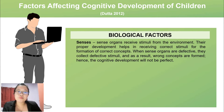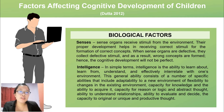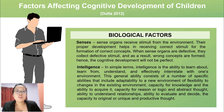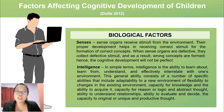Hence, cognitive development will not be perfect when there is a defect in our sense organs. The second biological factor is intelligence — the ability to learn about, learn from, understand, and effectively interrelate with one's environment. This ability includes adaptability to a new environment, capacity for knowledge, capacity for reason or logic in abstract thought, ability to understand relationships, ability to evaluate and decide, and capacity for original and productive thought.